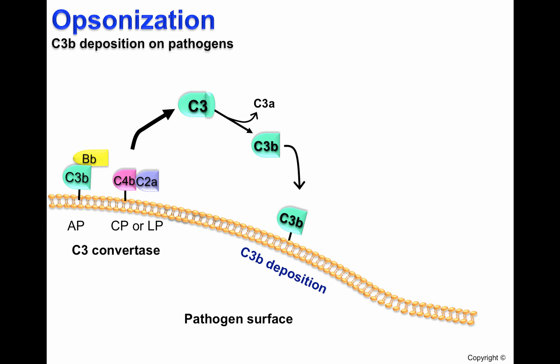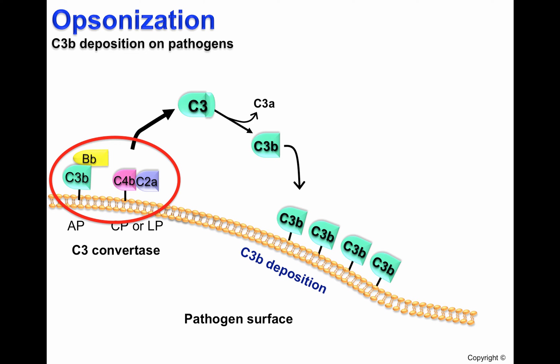The C3 convertases play a fundamental role in opsonization as they cleave hundreds of C3 molecules, leading to increased C3B deposition on the surface of pathogens.